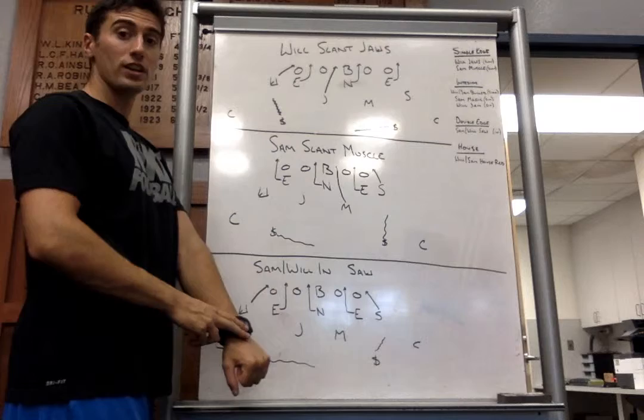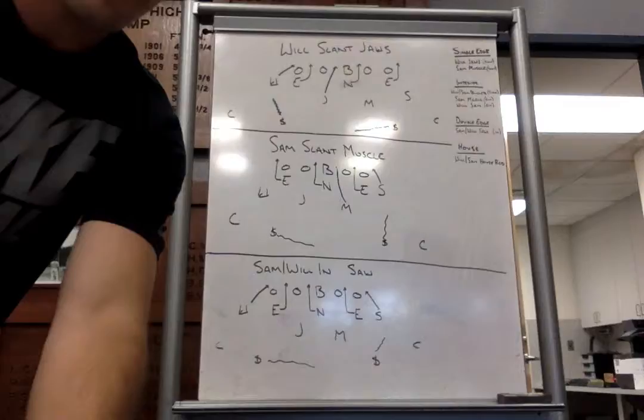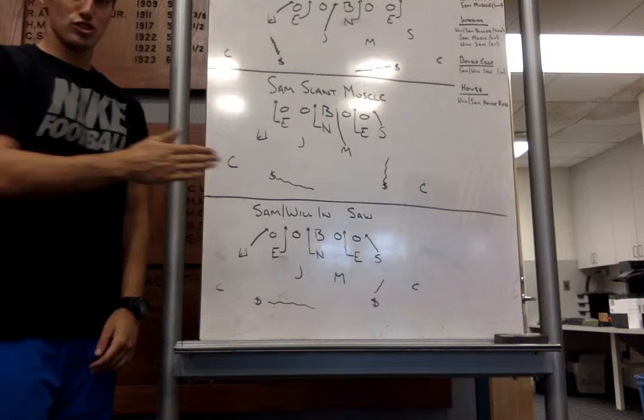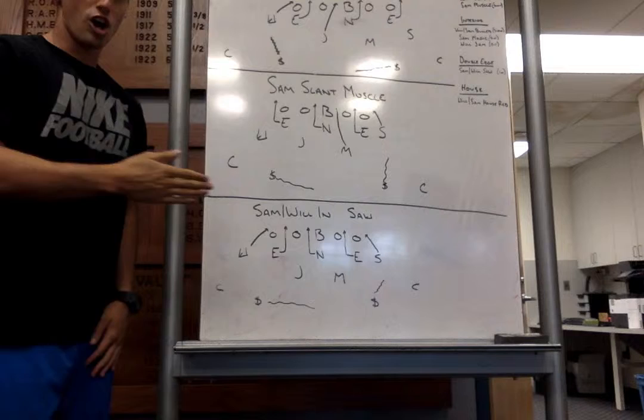The last one that we have of our edge pressures will be a double-edge pressure. This can be run out of our Sam or our Will. This will be Saw. Alright. So, it'll be Sam, N, Saw. Alright. That's what we have lined up. Sam is six, four, zero, four. Alright.